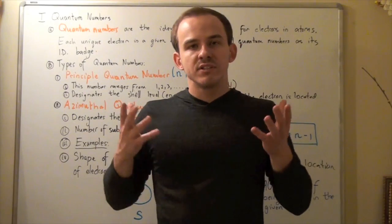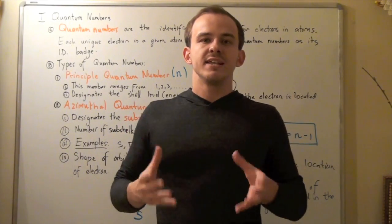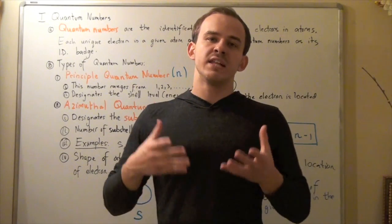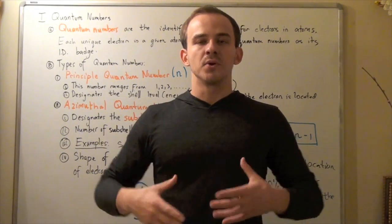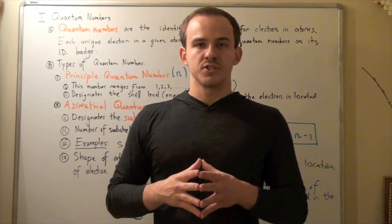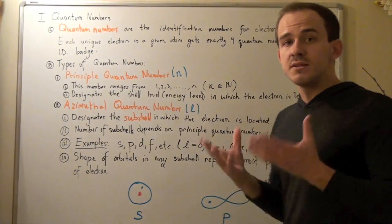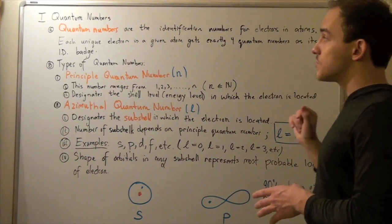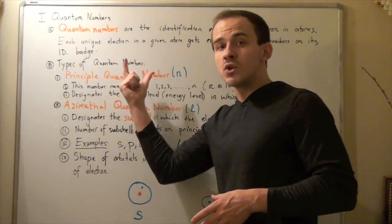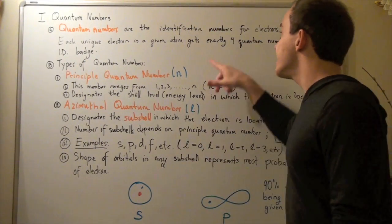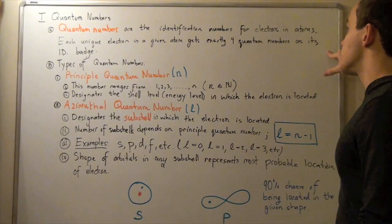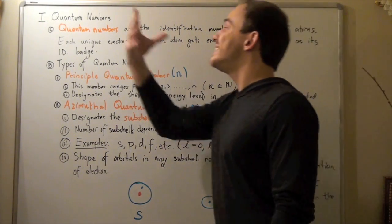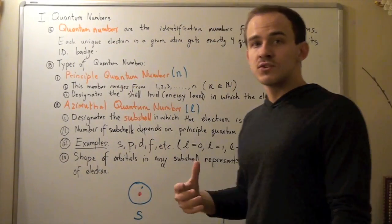Just like any given car in any given state has a unique license plate number, every electron in any given atom has a unique license plate number composed of quantum numbers. Quantum numbers are simply the identification numbers for electrons in atoms. Each unique electron in any given atom has exactly four quantum numbers which make it unique — like the ID badge of that unique electron.